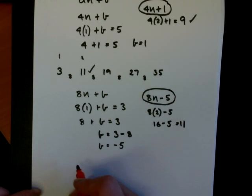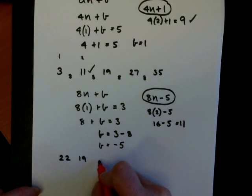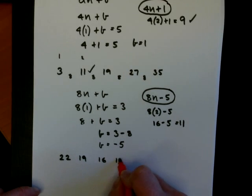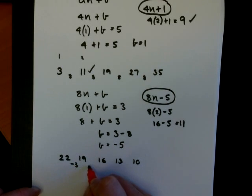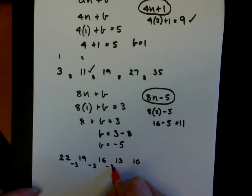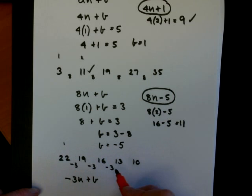Now it's very unlikely, but just suppose our sequence was going down: 22, 19, 16, 13, 10. Well, this time the difference is minus 3. So our sequence will be minus 3n plus b. If I take my first term as 22, then minus 3 times 1 plus b equals 22.